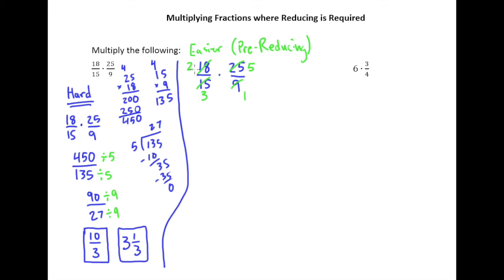3 doesn't have anything in common with 2 or 5. So at this point, now that I've done all my pre-reducing, I take 2 times 5 on top is 10. 3 times 1 on bottom is 3. And there's the same answer I got down there with a lot less work.